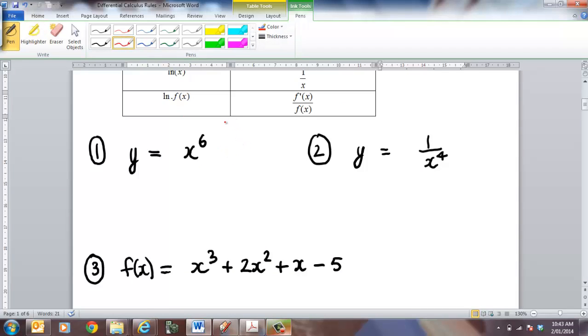So the rule here that we're using is x to the n is equal to n x to the n minus 1. If I get a y term then I have to write dy/dx and that's saying I'm differentiating y with respect to x. Now all I do is I bring my power down so that's 6x and then I decrease my power by 1 and that becomes 6x to the 5 and that's it done.